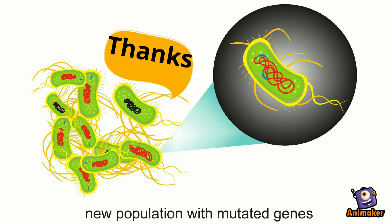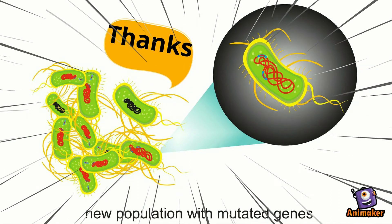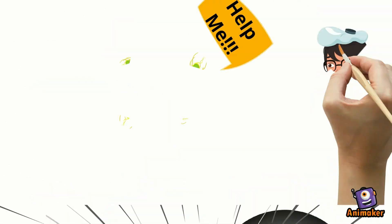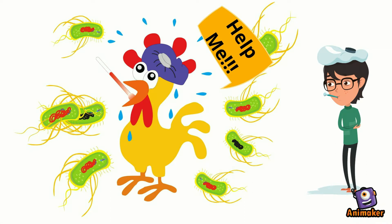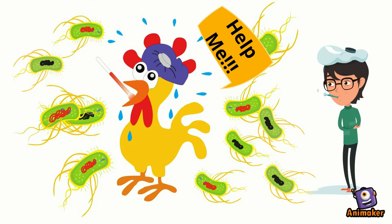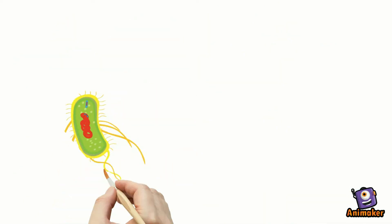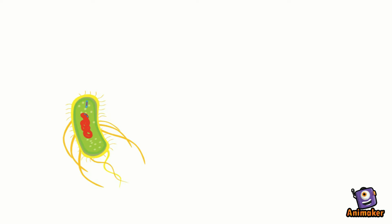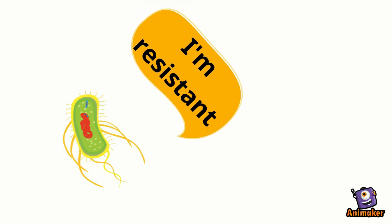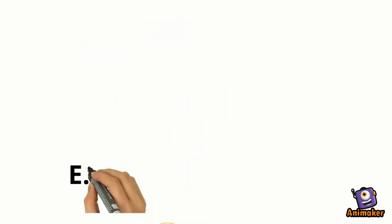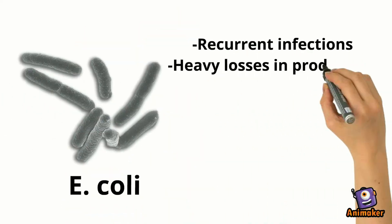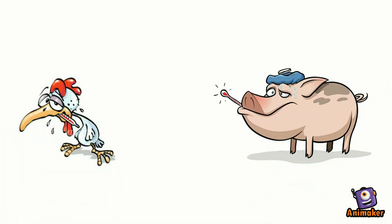Thus, a bacteria without a resistant gene will receive a resistant gene plasmid, which gets incorporated into the genetic material of the organism. When the bacteria replicates, the mutated genetic material is distributed, and before long, a colony of mutated organisms resistant to the drug exists. The presence of antibiotic-resistant organisms ensures the existence of drug-resistant organisms like E. coli, which causes recurrent infections and heavy losses in productivity and performance in poultry and swine farming.